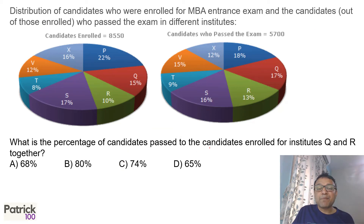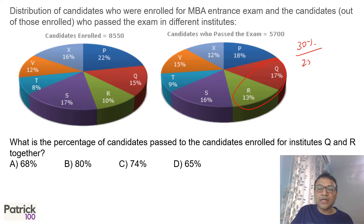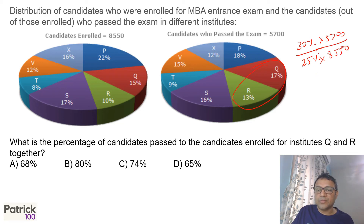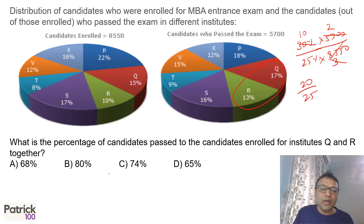What is the percentage of candidates passed to candidates enrolled for Q and R together? Q and R together is 30% passed, and Q and R together enrolled is 25%. So 30% of 5,700 divided by 25% of 8,550. We had calculated this earlier as 2 upon 3, so with that we get 20 upon 25, which gives 80% as the answer.